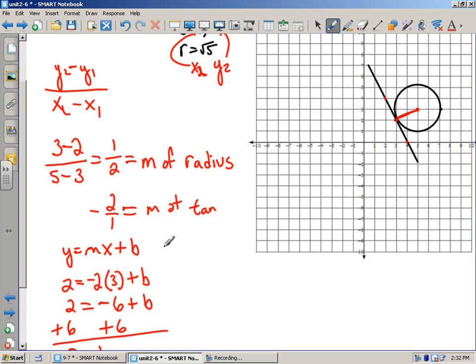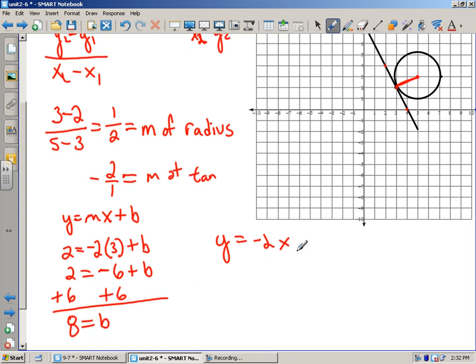If we plug all our information back into our slope intercept form we have y = mx, which is -2x, plus b and we said that b was 8, so it's plus 8. So that's finding the slope of a line tangent to a circle at some point.